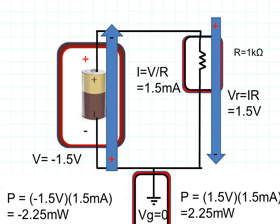Now let's look at the battery. We know it must be producing power. The current entering the battery in the positive-to-negative direction is positive 1.5 milliamps. The voltage across the battery, measured from bottom to top, is negative 1.5 volts. So the power equals negative 1.5 volts times positive 1.5 milliamps equals negative 2.25 milliwatts. Since the power is negative, the battery is producing power. Power must be conserved: power produced is −2.25 milliwatts and power used is +2.25 milliwatts — equal and opposite.